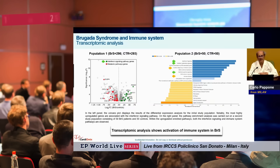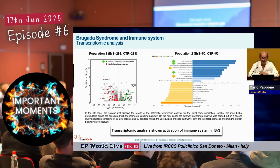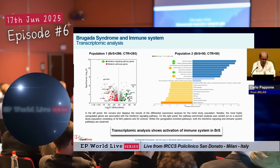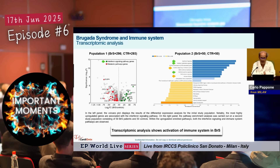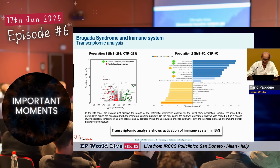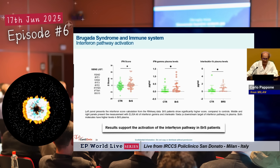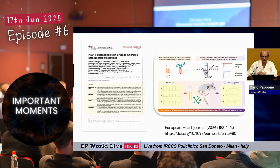In our experience over the last 10 years, we assessed the physiology of the cells and the omics. Exploring the proteomics, we found that in our patients there is an over-activation of the immune system. This is explained by the over-activation of the interferon pathway in Brugada patients.